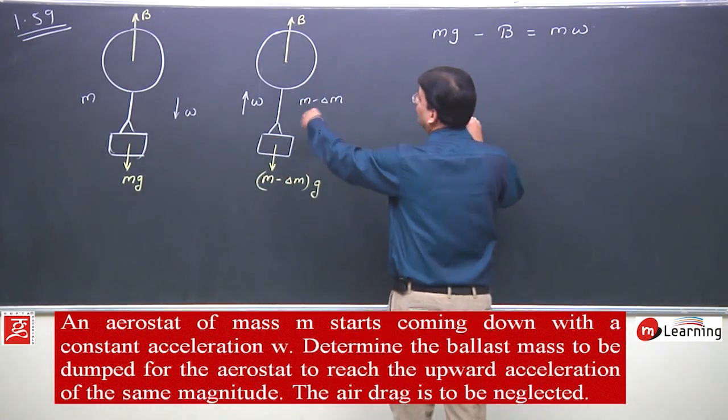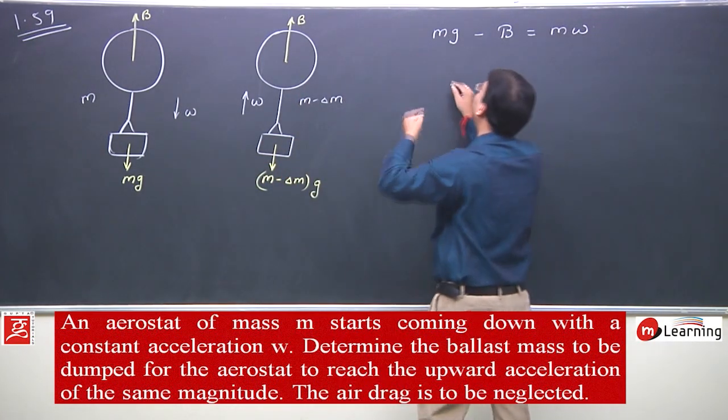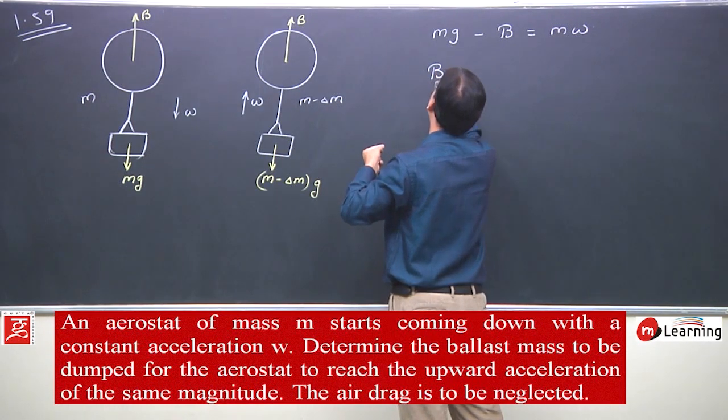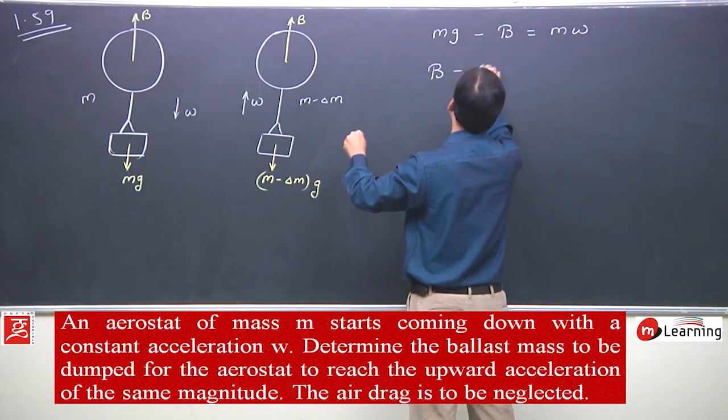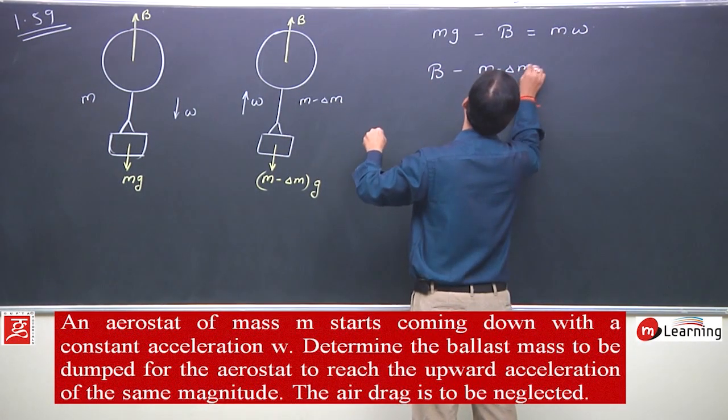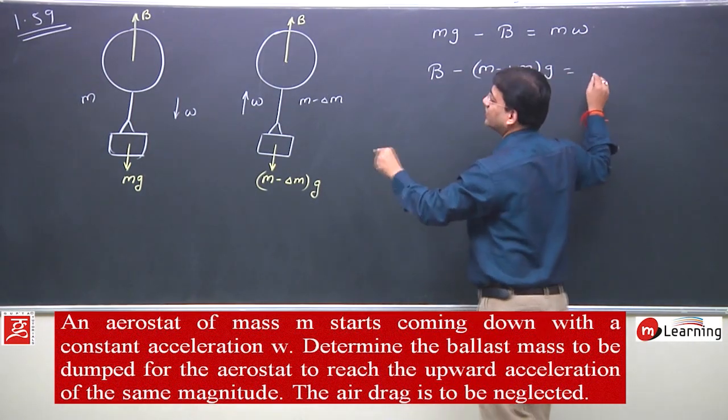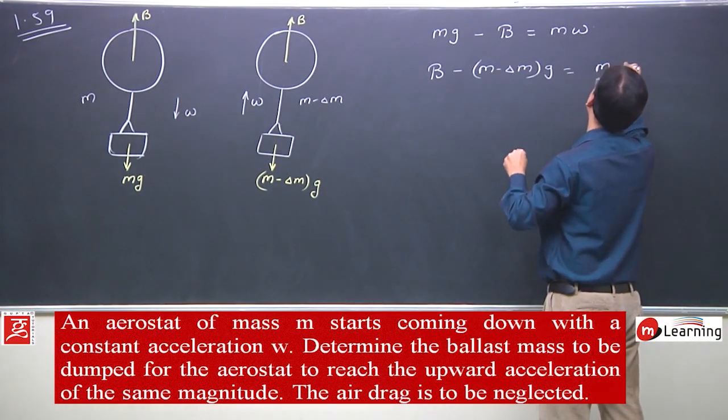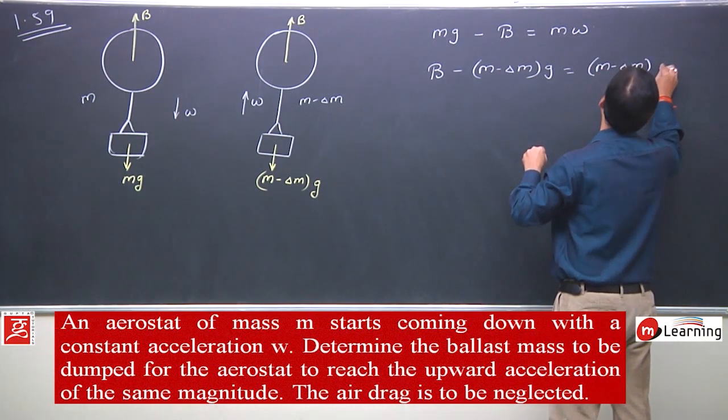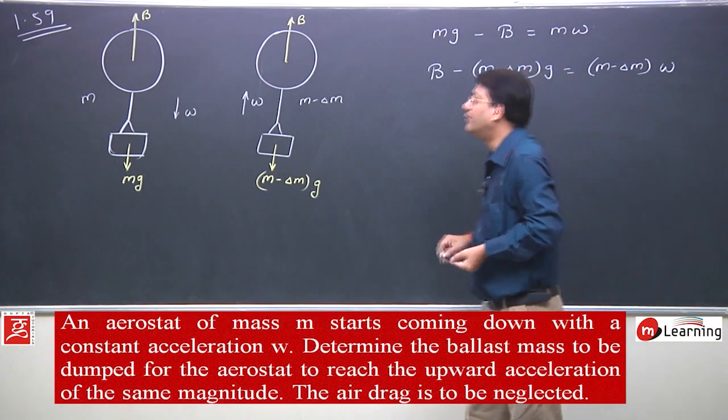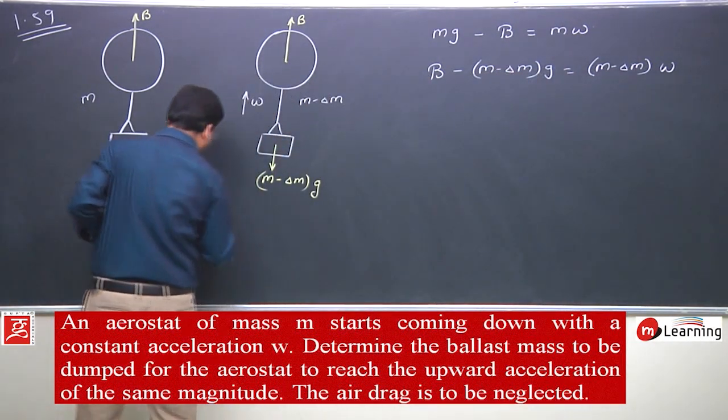In the second situation with acceleration w upward, buoyant force minus (m - delta m)g equals mass times acceleration, which is (m - delta m)w. The same acceleration w, where delta m is the mass dumped.